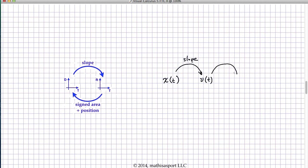When I take the slope of the V versus T curve at a particular point, that gives me the height of the A versus T curve at that corresponding point, which in this case is that time. Similarly, I can go from the A versus T curve to the V versus T curve by adding in the signed area plus the initial velocity.